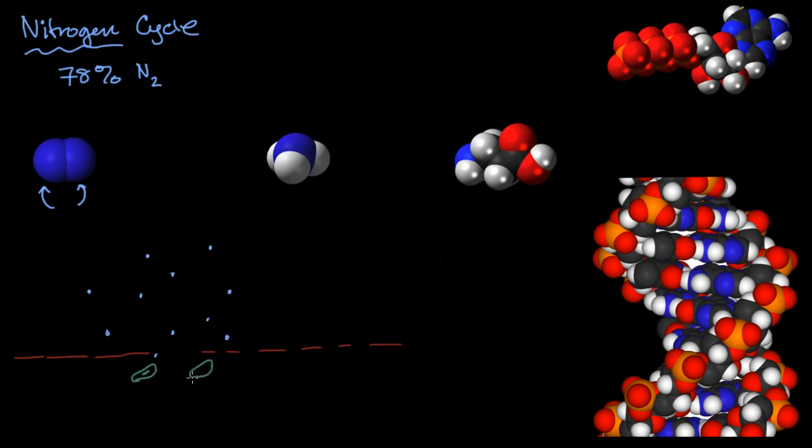So prokaryotes, right over here, there's the bacteria. And certain types of bacteria are capable, and prokaryotes are capable of fixing nitrogen. So what they're able to do is they're able to take that N2 and turn it into a form that is more usable by complex organisms like plants. So this is the bacteria right over here. That's the bacteria. That's just a little circular strand of DNA.